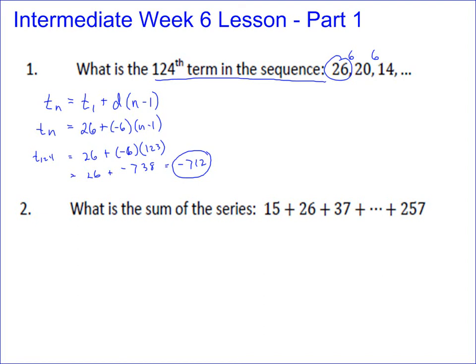Okay, this one asks for the sum of the sequence. Remember, your sum is the first term plus the last term divided by 2 and then times the number of terms. So we first need to find, we know the first and the last, right? So it's going to give us 15 plus 257 divided by 2. But we need to know what the number of terms is.